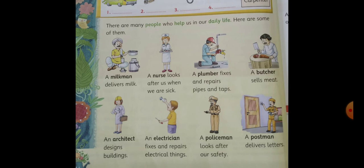Children, do you know who looks after our safety? Suppose there is a robbery somewhere, or somebody has stolen things — whom do we call? We call a policeman. A policeman looks after our safety. And a postman — what does he do? A postman delivers letters and parcels.